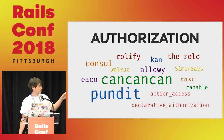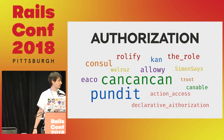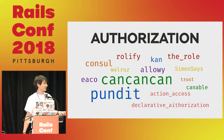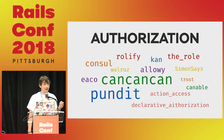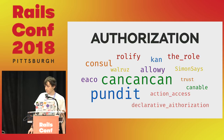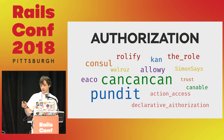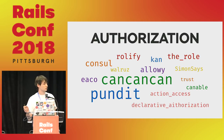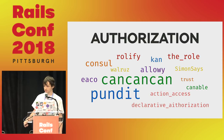I guess most of you know tools like CanCan and Pundit. We're mostly going to talk about them a little bit later. There are many others, and that information is from the Ruby Toolbox — an official list of tools for authorization.